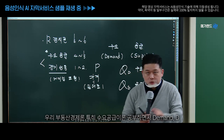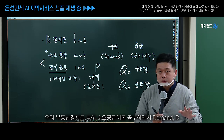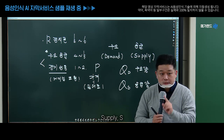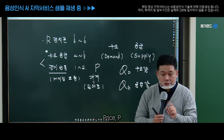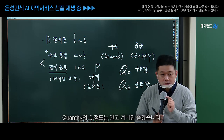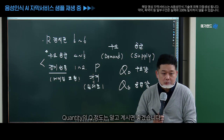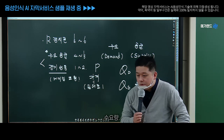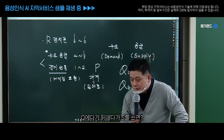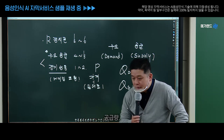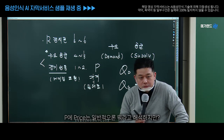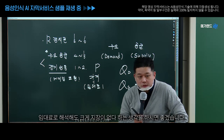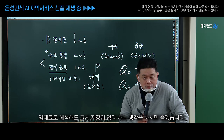부동산 경제론, 특히 수요공급이론 공부하면서 demand D, supply S, price P, quantity Q 정도는 알고 계시면 좋겠습니다. Q에다가 D를 쓰면 수요량, Q에다가 S를 쓰면 공급량. P의 price는 일반적으로 가격으로 해석하지만, 임대료로 해석해도 크게 지장이 없다 하는 생각을 하시면 좋겠습니다.